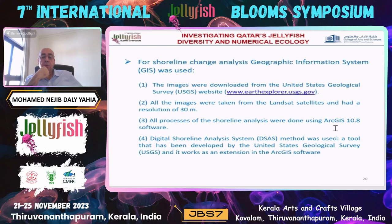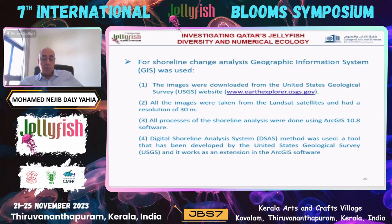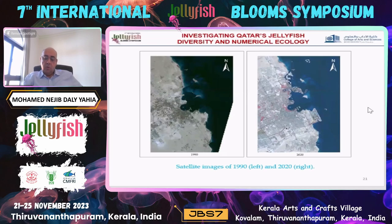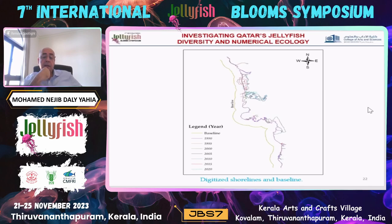For the shoreline change analysis, we used Geographic Information Systems — this was a contribution from my senior project student. Images were obtained from the United States Geological Survey using Landsat satellites with a 30-meter resolution. All shoreline processing was done using ArcGIS and the Digital Shoreline Analysis System (DSAS) method. Here you can see a comparison between satellite images from the 1990s compared to nowadays, showing how the shoreline was developed with artificial islands — the Pearl, the airport — and the digitized shoreline at different years shown in different colors.